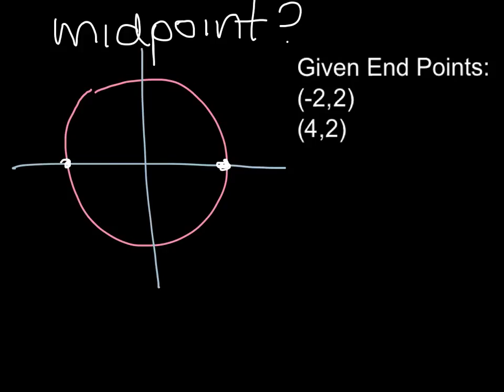So now we get to the question, how can we find the midpoint if we're only given two endpoints? So here, we have negative 2, 2, and at the other end is 4, 2.